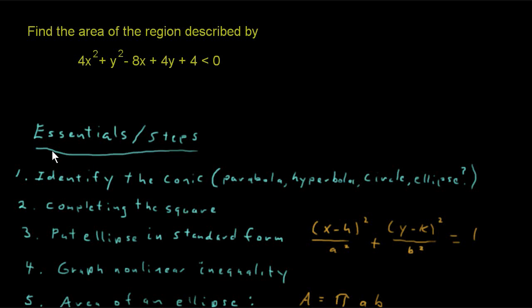The essentials are in this case the steps to work this problem. The first step is to identify the conic. This is a conic described up here. Is it a parabola? Well, let's see. If it was a parabola, one of the variables would just have to be degree 1, and they're both degree 2, so it's not a parabola.